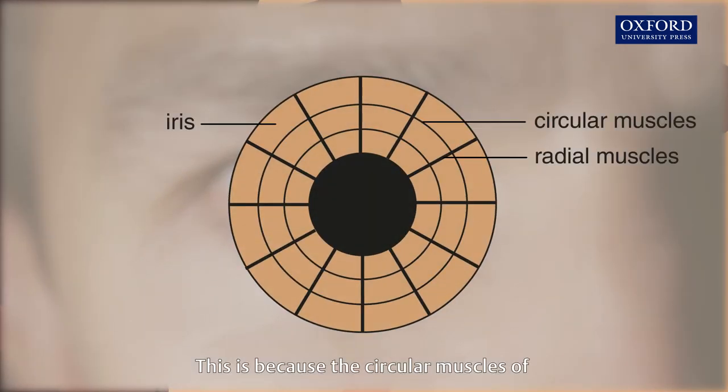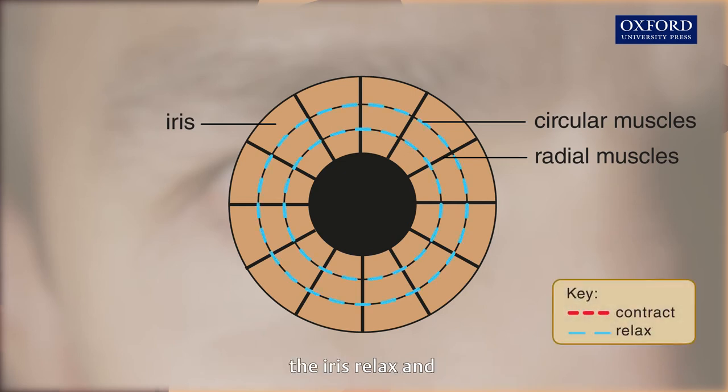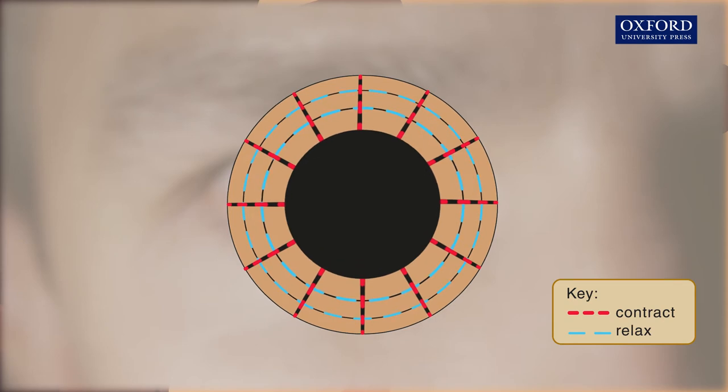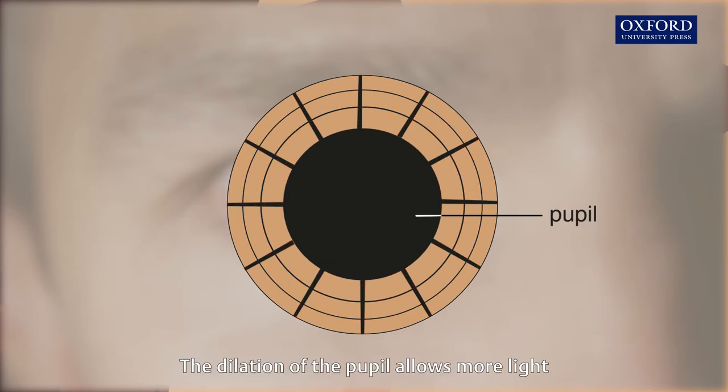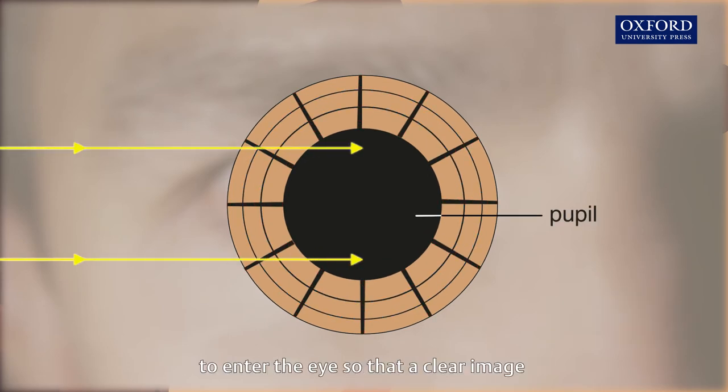This is because the circular muscles of the iris relax and the radial muscles contract. The dilation of the pupil allows more light to enter the eye so that a clear image can be seen.